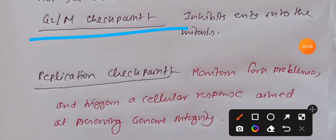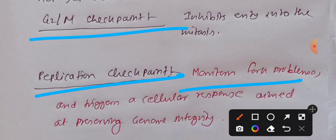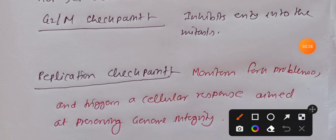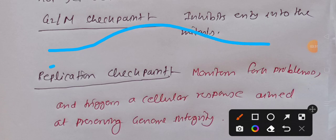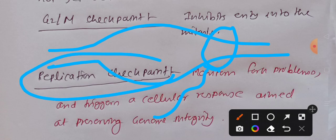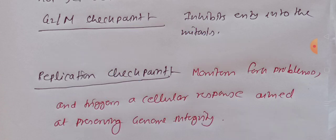There is also the G2/M checkpoint, which will prevent the entry into mitosis. The last is the replication checkpoint, which monitors replication fork problems and triggers a cellular response that aims to preserve genomic integrity. The replication fork may cause DNA damage or induce mutations. Under such circumstances, the replication checkpoint creates a cellular response to preserve genome integrity. So that's the video for DNA damage checkpoints.